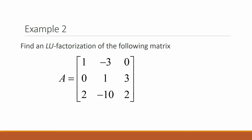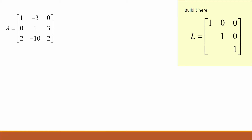We saw that L times U equals A, but the question remains: how do we determine the matrices L and U? We can find the triangular matrices through the use of Gaussian elimination. In Example 2, to find an LU factorization of a given matrix A, we start by setting up our work with a designated place in the upper right-hand corner to begin building matrix L.